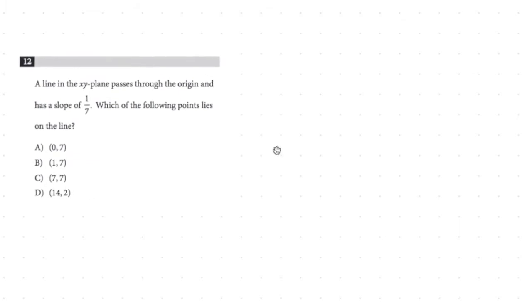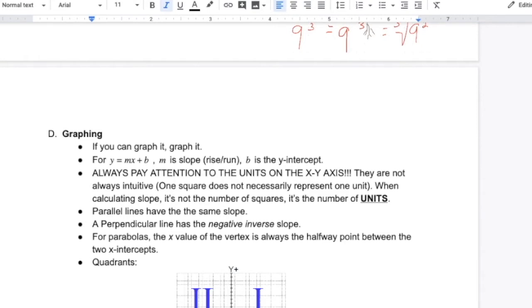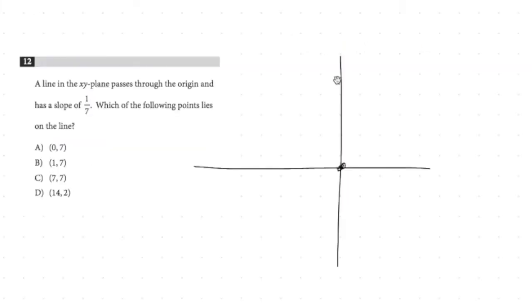They've given us information to graph this, so I'm going to make a quick X-Y axis here. I'm not looking for perfection. It says it passes through the origin — do you guys know what that means? It's point zero comma zero, right there. That's one of the points. And it tells us it has a slope of one over seven. Slope is rise over run, so it's up one over seven. Does that make sense? So let's go up one, over seven — that gives us another point.